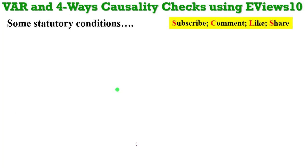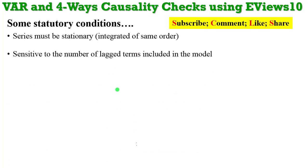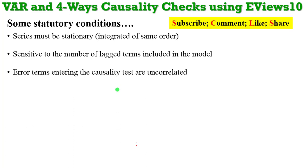Let's take a look at some prerequisites that must be in place before you can engage causality checks in VAR. Number one, the series must be stationary — that is, they must be integrated of the same order. Number two, when doing causality checks, the number of lags you use in your model must be those determined by the information criterion, because the model is sensitive to the number of lags used. The error terms entering the model must not be correlated.